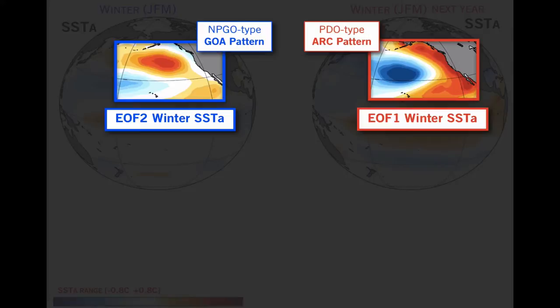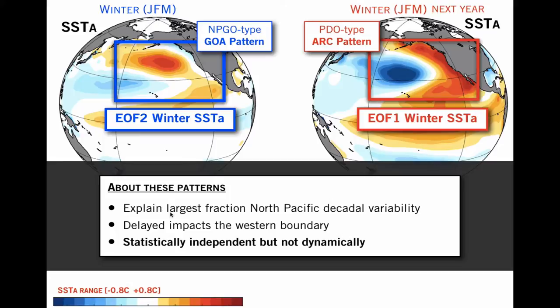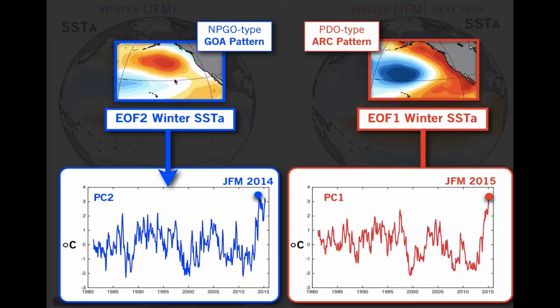We know a lot about these two types of patterns. We know they explain the largest fraction of North Pacific decadal variability. The expression of this pattern is also associated with a delayed impact in the western boundary current and in the Kuroshio region, typically happening through the emanation of large-scale Rossby waves. They've been described as statistically independent because they emerge from EOFs of sea surface temperature, but in reality, dynamically they're not independent. For example, during the strong warm event of 2014–15, this warm event started as a Gulf of Alaska pattern and then migrated the following winter into a PDO-type pattern.